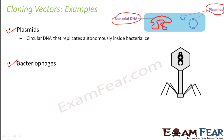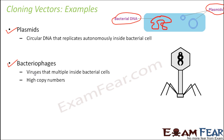The next example would be bacteriophages. Even though the name says bacteriophage, they are not bacteria — they are viruses that multiply inside bacterial cells. These viruses enter inside the bacteria and then replicate themselves there. While replicating, they are considered as a part of the bacteria. The bacteria is a host cell for these viruses. So bacteriophages can also act as cloning vectors.